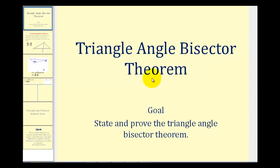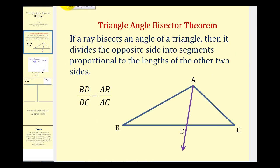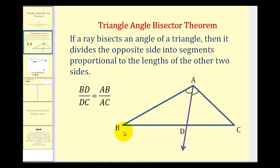Welcome to a lesson on the Triangle Angle Bisector Theorem. The goal of this video is to state and prove this theorem. The Triangle Angle Bisector Theorem states that if a ray bisects an angle of a triangle, as we see here in purple, meaning this angle here is congruent to this angle here, then it divides the opposite side into segments proportional to the lengths of the other two sides. So the ratio of BD to DC equals the ratio of AB to AC.